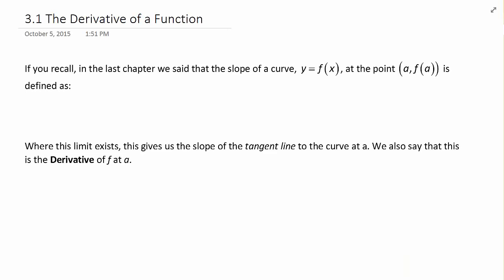If you recall, in the last chapter we said that the slope of a curve y equals f of x at any point a, f of a, is defined as m equal to the limit as h approaches 0 of f of a plus h minus f of a all over h. And where this limit exists, this gives us the slope of the tangent line to the curve at that point a. We also say that this is the derivative of f at a.